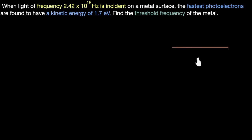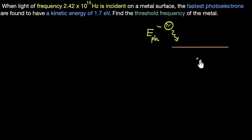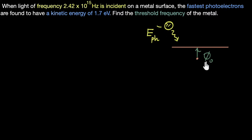It says if you have an electron inside a metal and you shine light on it — light which is made of photons — then those photons have some energy, which we can call E of photon. When the electron absorbs that energy, part of it is used to overcome the work function. The work function represents the minimum energy the electron needs to escape the metal, so the photon needs to at least have that much energy. Otherwise, no photoelectric effect is going to happen.